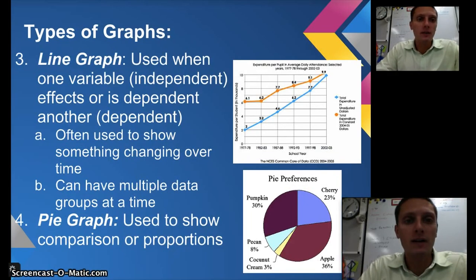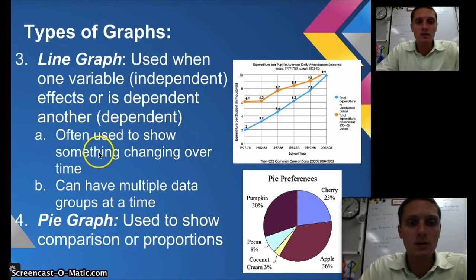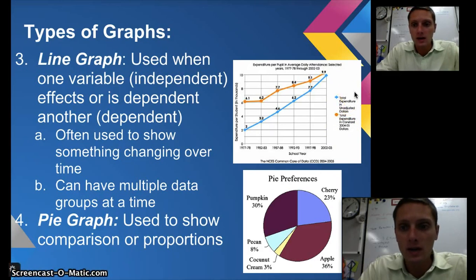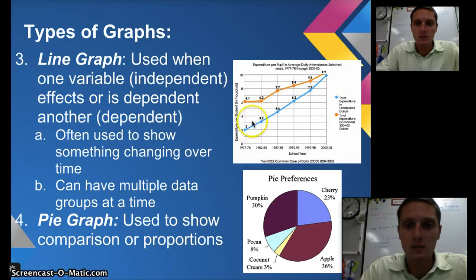Our third type of graph is a line graph. We use this when one variable — the independent — affects or is dependent on another, the dependent variable. It's often used to show something changing over time. In this example we're looking at expenditure per pupil in average daily attendance from 1977 to 78 onward, comparing total expenditure in unadjusted dollars versus constant 2004-2005 dollars. On the y-axis we have expenditure per student, and on the x-axis we have school year. Line graphs will almost always show something changing over time.